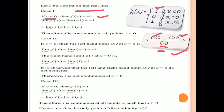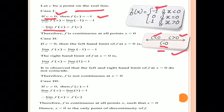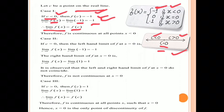We find limit x approaches c of f(x). Since c < 0, and for all x < 0 the value of f(x) is −1, the limit equals −1. Since the limit equals f(c) = −1, by the definition of continuity, f is continuous at all points x < 0.